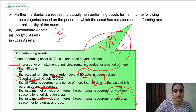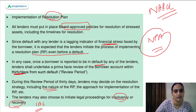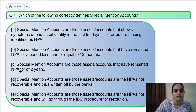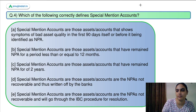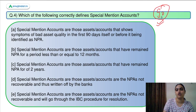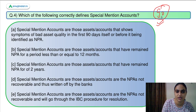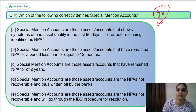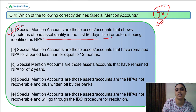Moving to the last question related to this topic: which of the following correctly defines SMA? Before 90 days, loans showing signs of default are mentioned in Special Mention Accounts. They are assets that show symptoms of bad quality in the first 90 days themselves, before we classify them into NPAs.